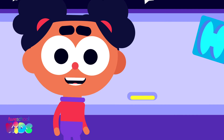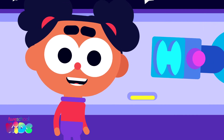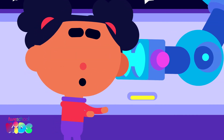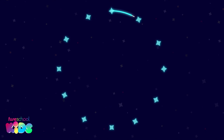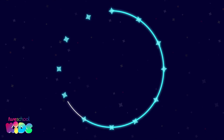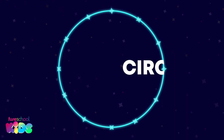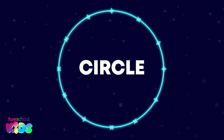Let's see what 2D shapes we can make by using the stars. Joining these stars makes a round shape with no corners. It is a circle.